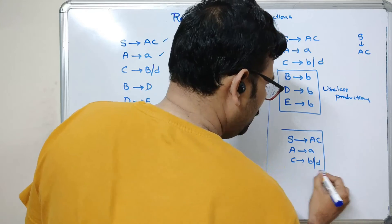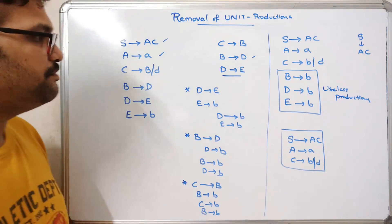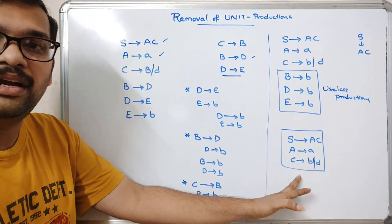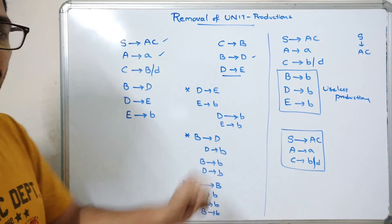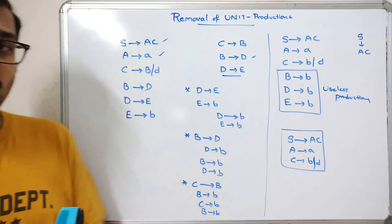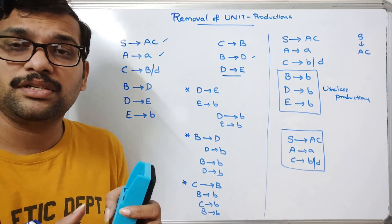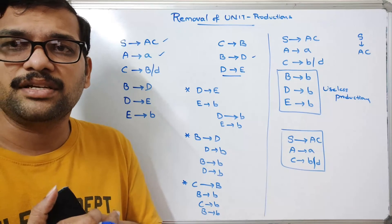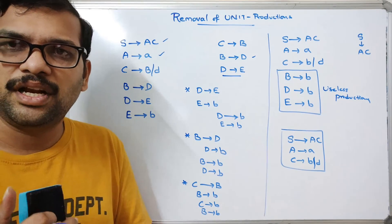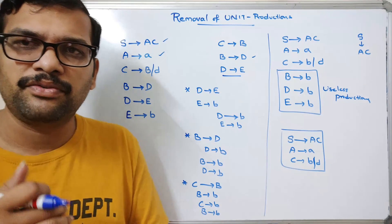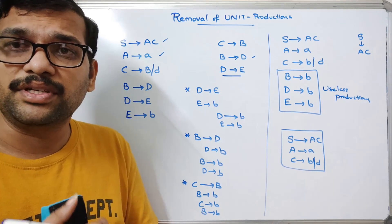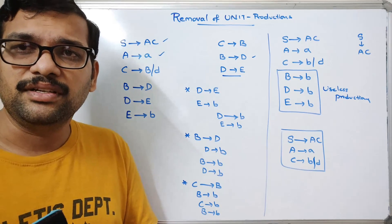So this is the simplified CFG for the given CFG. Hope you understood. If you have any doubts regarding the removal of unit productions, feel free to post in the comment section and I'll try to clarify. If you enjoyed this session, like and share it with your friends, and don't forget to subscribe to our channel. Thanks for watching!